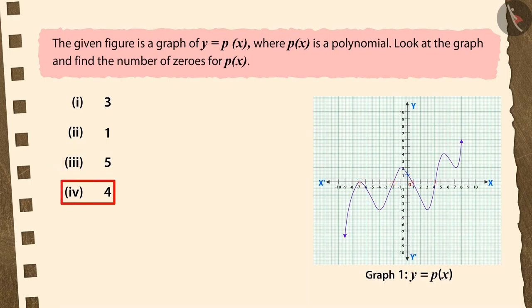If you have chosen the fourth option, it is the correct answer. Well done! This graph intersects the x-axis at a total of four points. So here, the number of zeros of the polynomial px will be 4.